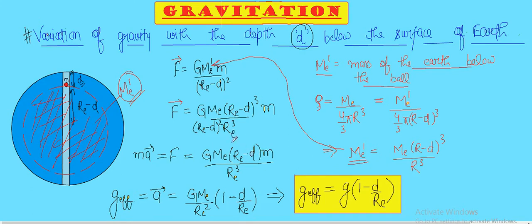So this will be cancelled out and the formula becomes pretty simple: GM_e(r_e - d)m upon r_e^3. Remember, I'll put net force equals mass times acceleration. When I cancel a small m, I get acceleration due to gravity, which I will name as g effective.